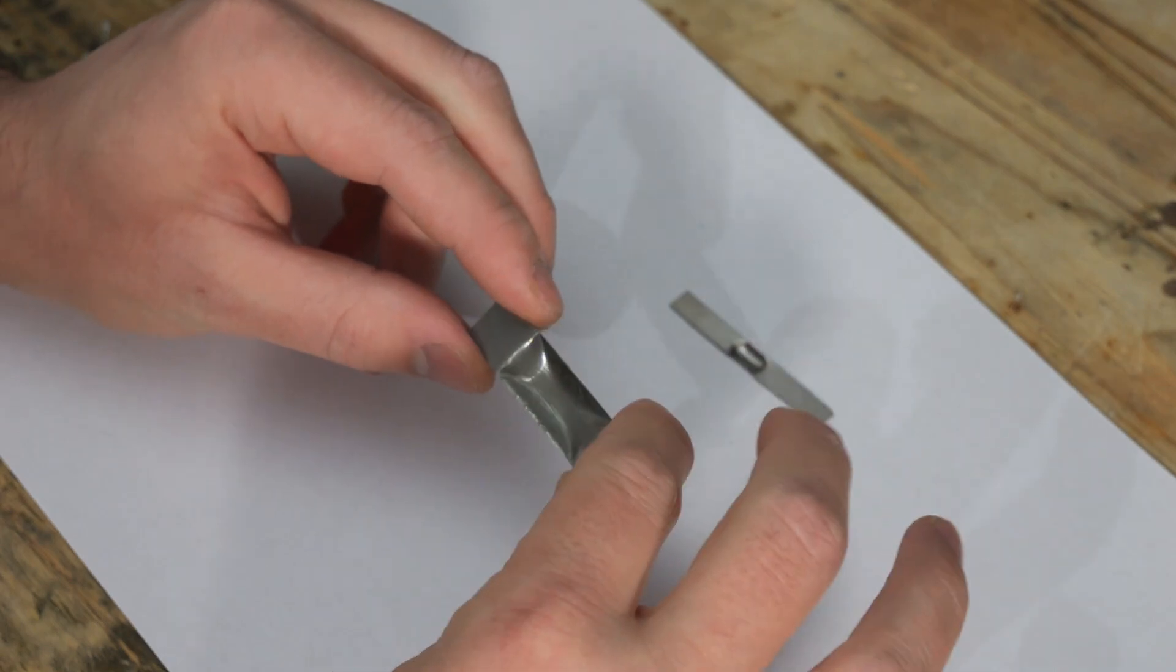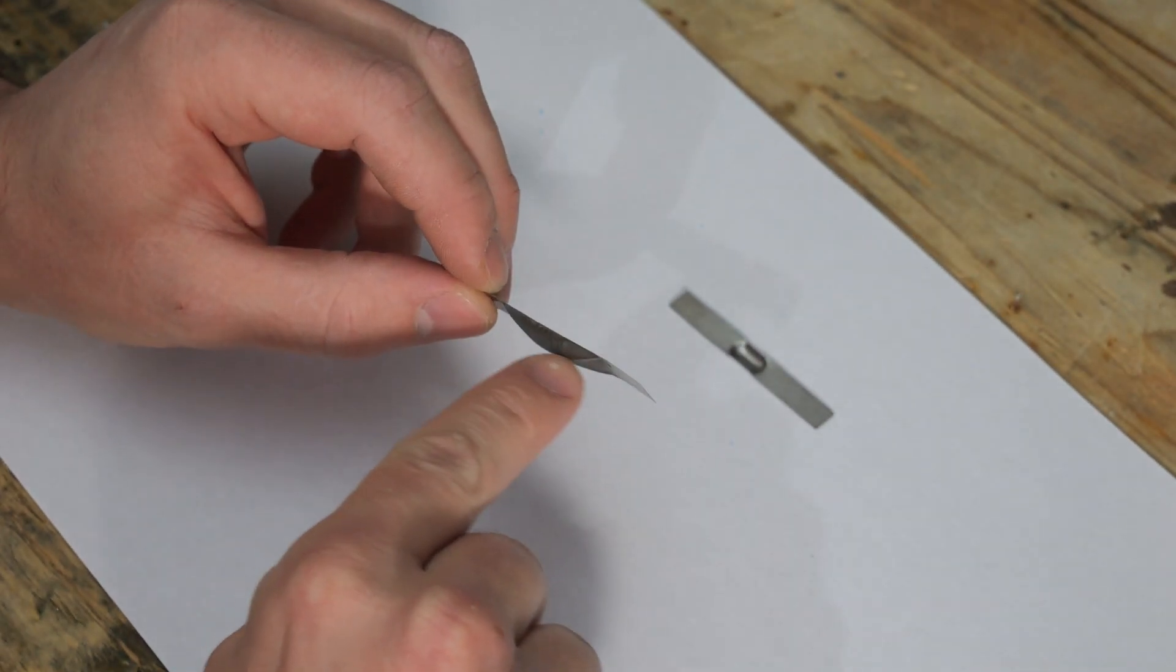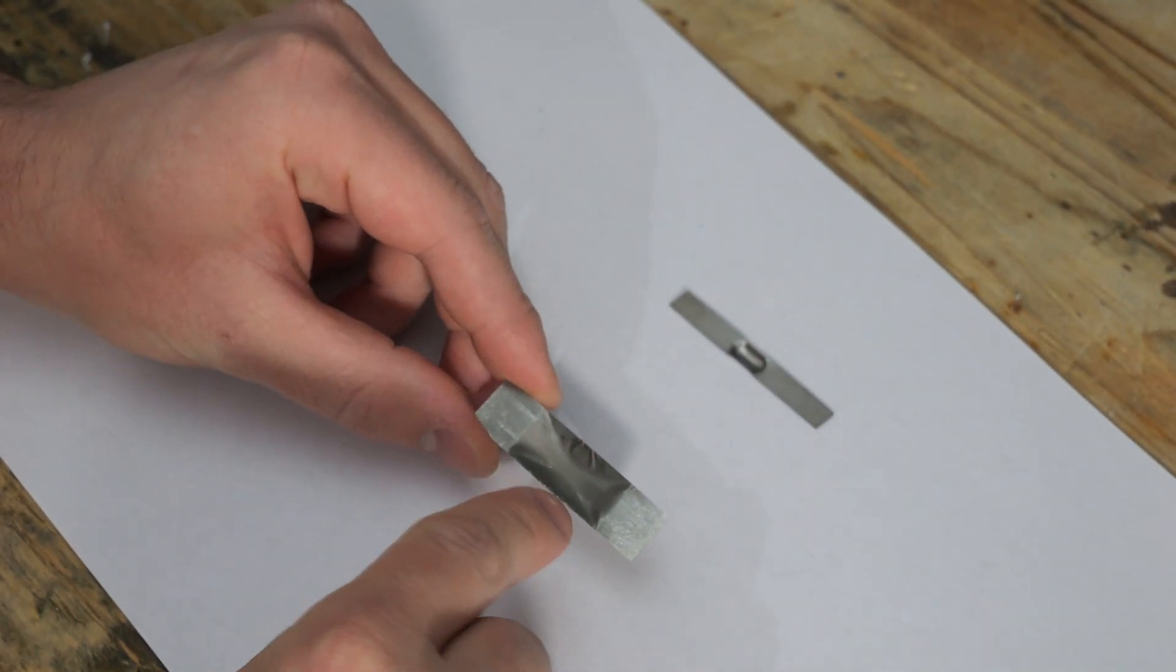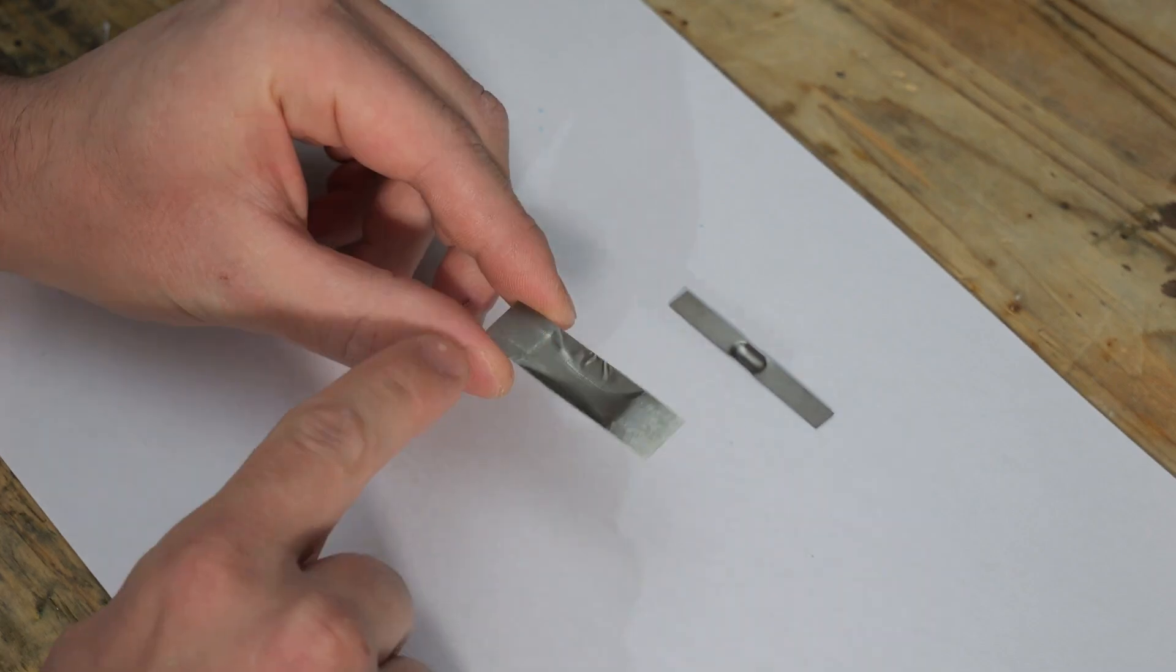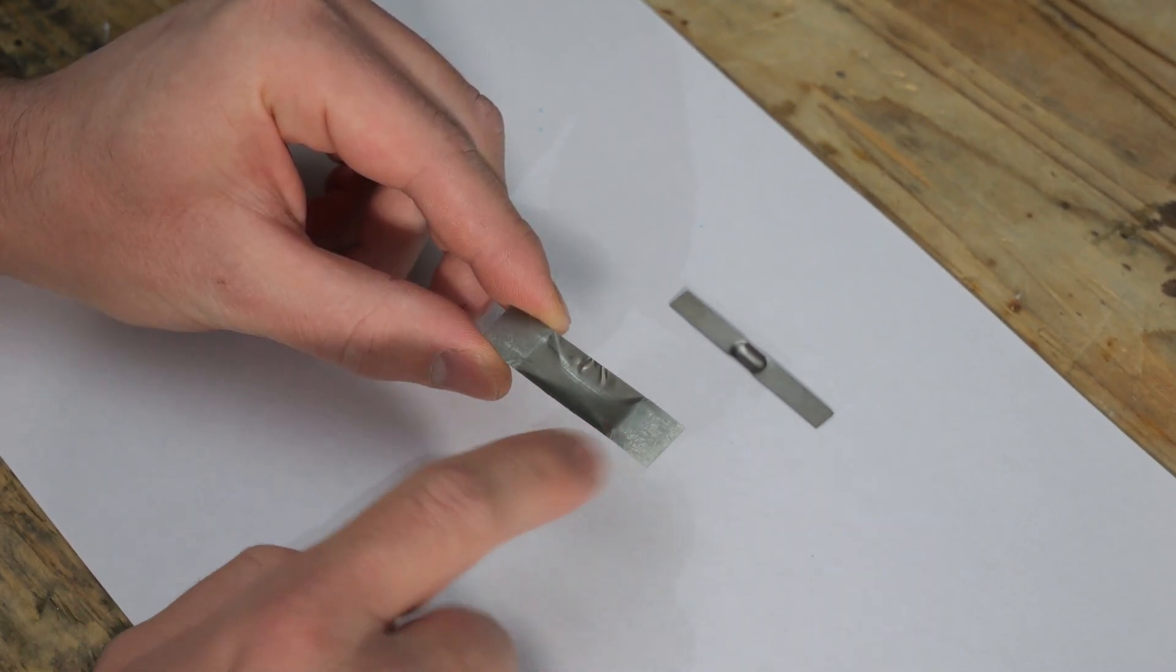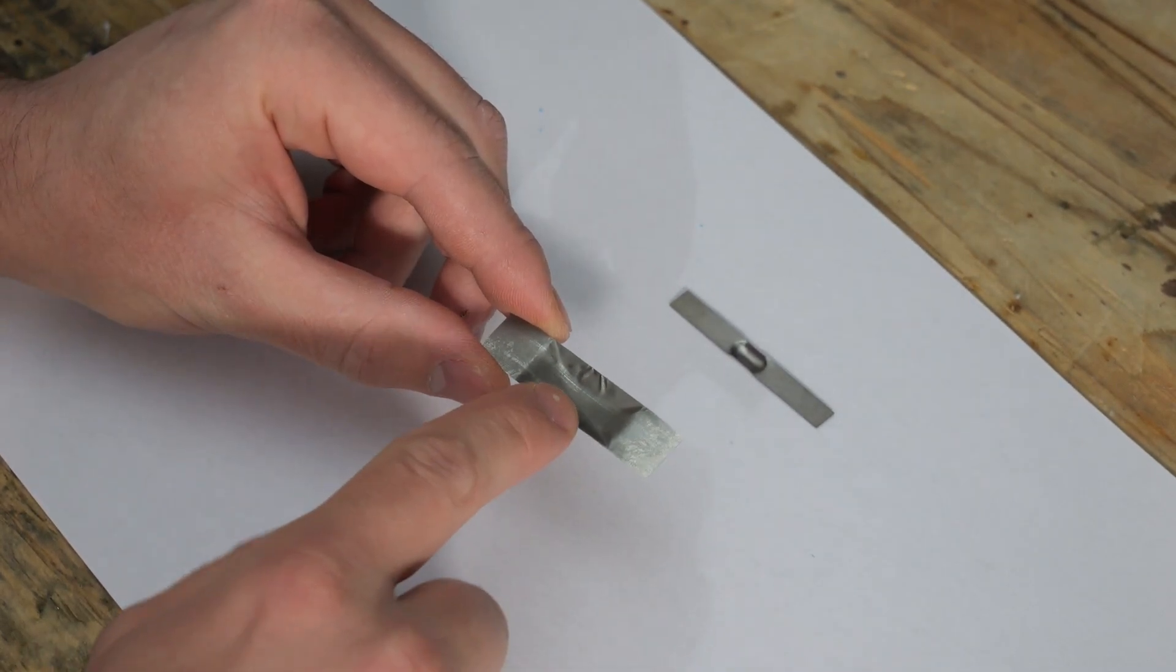This is a crucible. It is just a strip of molybdenum metal with an indentation in the middle and you can place the metal you want to evaporate in here and then pass a lot of current through this metal strip here to heat it up and evaporate the metal.